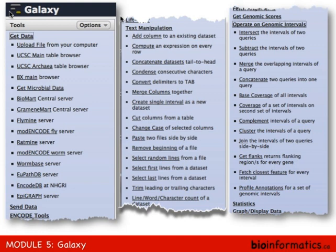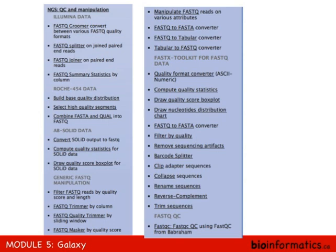A lot of the Unix-type tasks we've been doing the last couple of days — cutting a column from a file, cutting a row, manipulating and merging columns into a third file — all that kind of stuff we do with one-line Perl scripts, Galaxy can do for you with a push-button operation. How to change case, joining files, Bayes coverage, statistics — all that kind of stuff is also available.